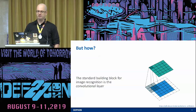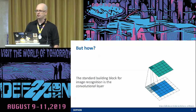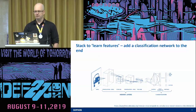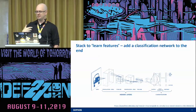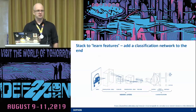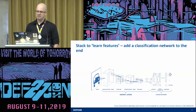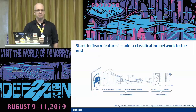The basic building block is something called a convolution — a patch that you stride over an image that learns to pick out different things like edges, corners, curves, and points. You stack a bunch of these convolutional layers together with hidden layers, then put a standard classification network at the end. The very last layer is usually a softmax layer, which assigns a probability to each class. If I put in an image of a car and the model is well trained, it might say it's 99.9% certain this is a car.